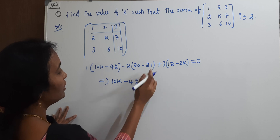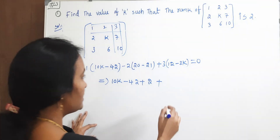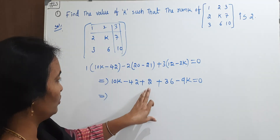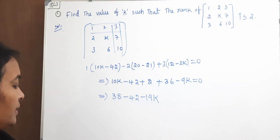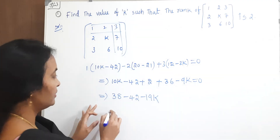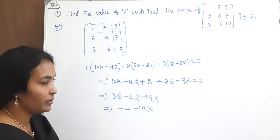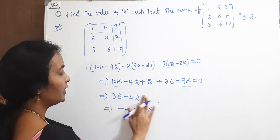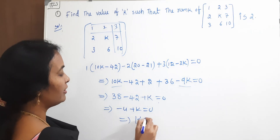So: 10k minus 42, minus 2 times (20 minus 21), plus 3 times (12 minus 3k) equals 0. Simplifying the constants: 36 plus 2 gives 38, and 38 minus 42 gives minus 4. For the k terms: 10k minus 9k gives k. So minus 4 plus k equals 0, therefore k equals 4. This is our answer.